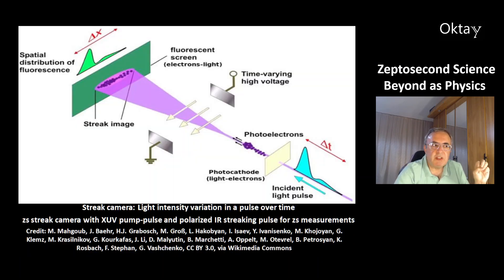This principle of the streak camera, that's the variation of a light intensity in a pulse over time, that's what's measured. The zeptosecond streak camera uses extreme UV pulse and polarized infrared streaking pulse for measurements in the zeptosecond timescale.